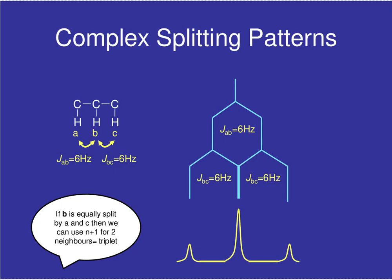We've seen splitting occur in action, but there are cases where splitting patterns are not as simple as a singlet, doublet, triplet, quartet, and so on. It would be nice to explore how more complicated splitting patterns may arise. I'm going to start with a straightforward splitting pattern — looking at the central hydrogen B, which in the proton NMR appears as a triplet because we follow the n+1 rule: it's got two neighbors, 2+1=3.